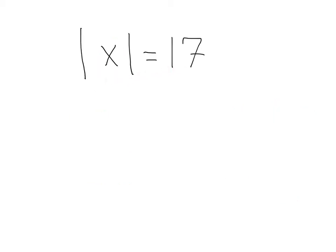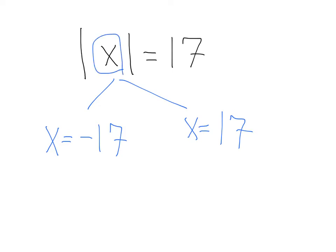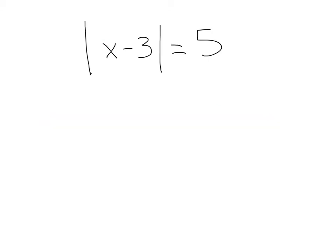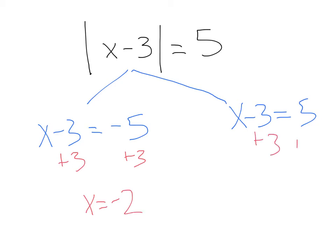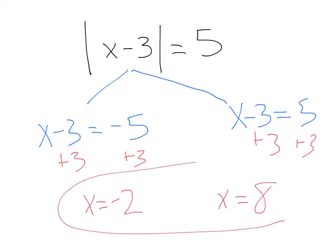In this case, we have absolute value of x equals 17. So let's take that x and set it equal to negative 17, and also set x equal to positive 17, because whatever's inside has to be 17 spaces from zero. Here we've got absolute value of x minus three equals five. Even though there's an expression inside, the concept doesn't change — we want x minus three to equal negative five and also positive five. Solving gives us x equals negative two and x equals eight. We could plug those back in to verify.